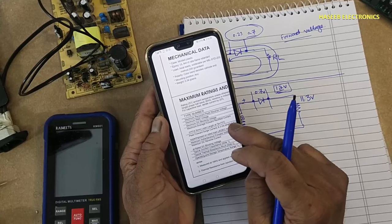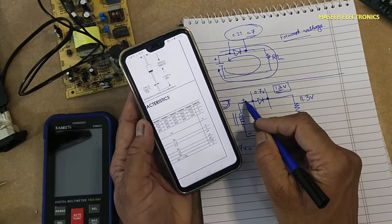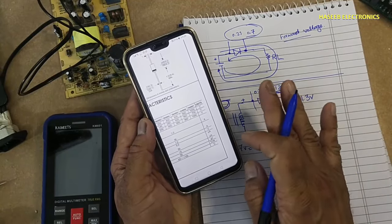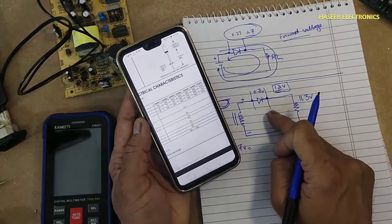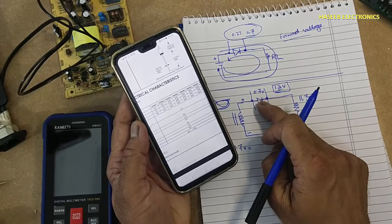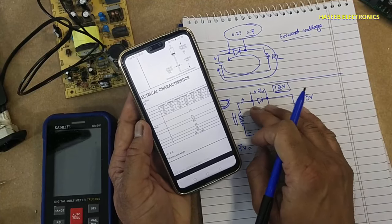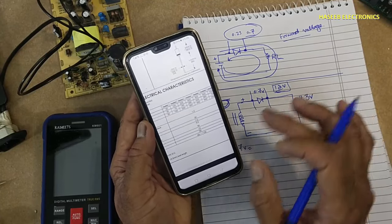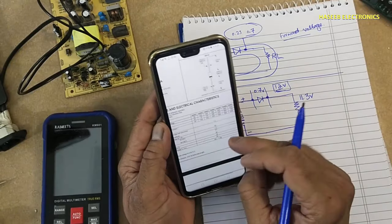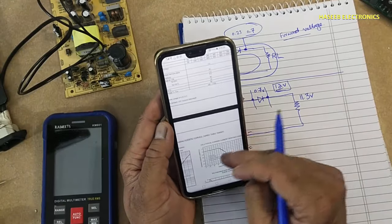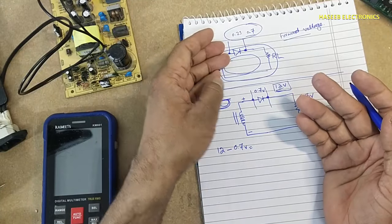Maximum average forward rectified current, that is 1 ampere. That is forward condition. This current, in reverse current it will block the voltage, it will block the current. And reverse current, when it is in reverse condition, the maximum current is 5 microamperes. We can see at that time it will provide a huge resistance. When 1 ampere current will flow, at that time it will drop 1 volt across its junction. That is VF, forward voltage. When we are checking diode in DC circuits, we deal with VF.